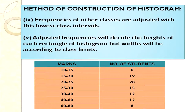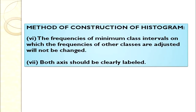Frequencies of other classes are adjusted relative to the lowest class interval. For classes 30–40, 40–60, and 60–80, we are going to plot only the adjusted frequencies for their heights. The adjustment formula is: minimum class interval gap × frequency of that class ÷ class interval gap of that class.